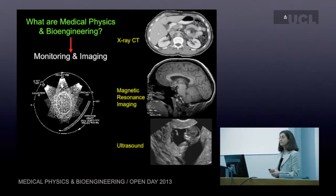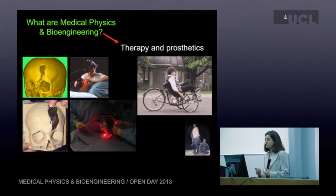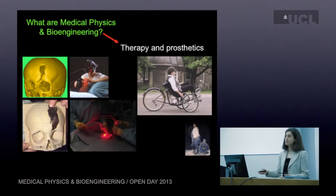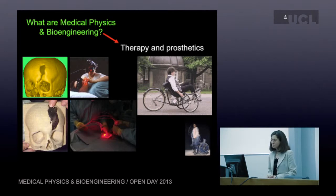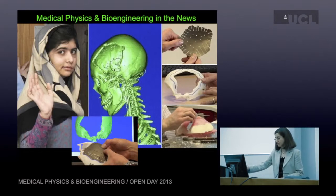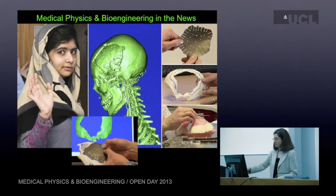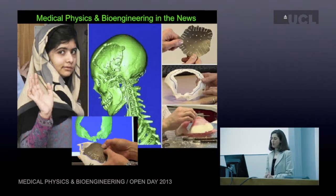Medical physics and bioengineering also involves therapy and prosthetics. You can see we've designed a plate to repair a defect in somebody's skull. Medical physicists and bioengineers are also involved in phototherapy — using lasers to treat people. On the right, this person is cycling around the UCL quad helped by neurostimulators. Last year a Pakistani teenager with a skull injury was helped by bioengineering techniques: a special plate was designed to fit the injury very precisely and placed by surgeons. You can see a CT image showing how that plate was designed, and that's the teenager walking away healthy after her surgery.